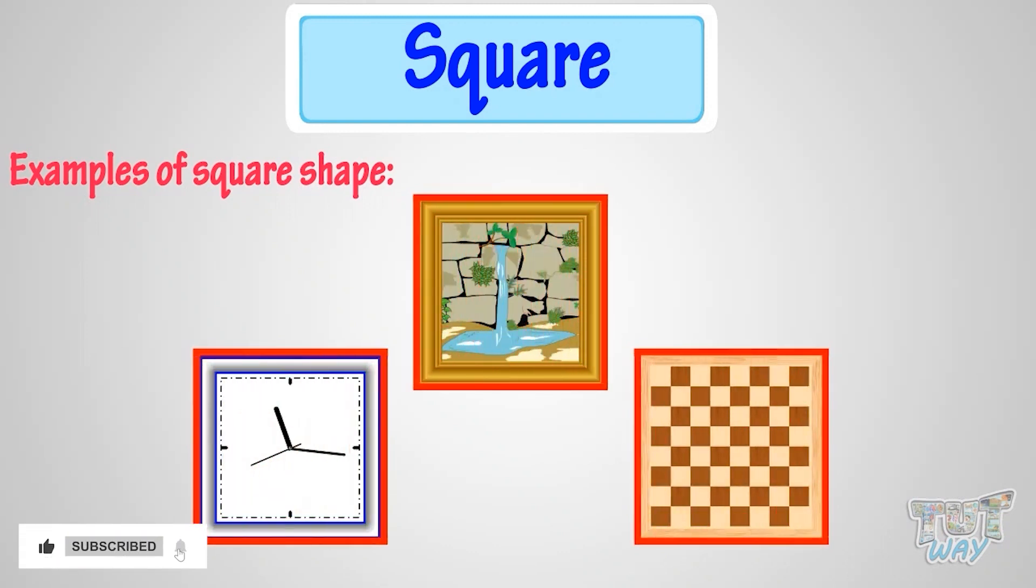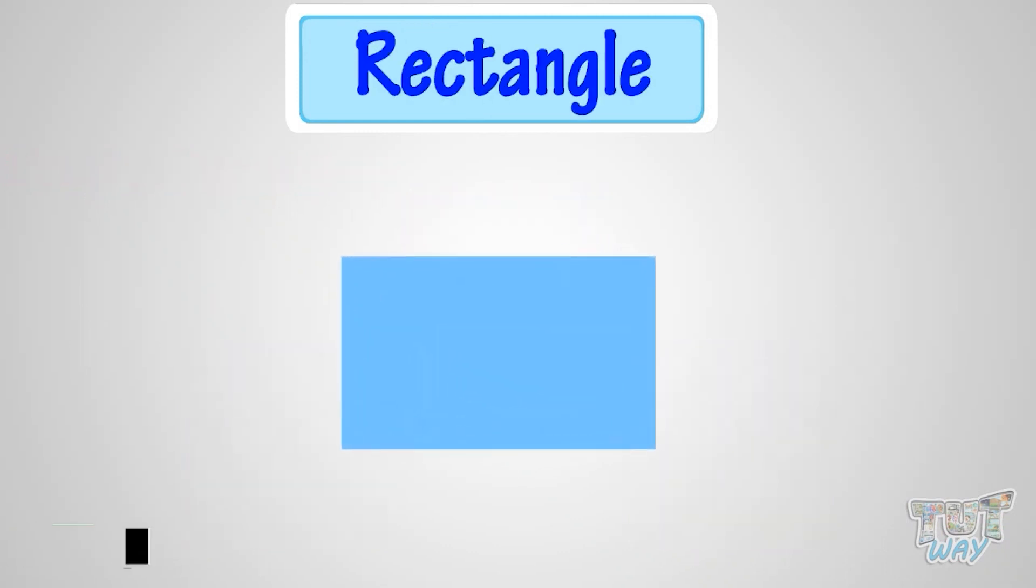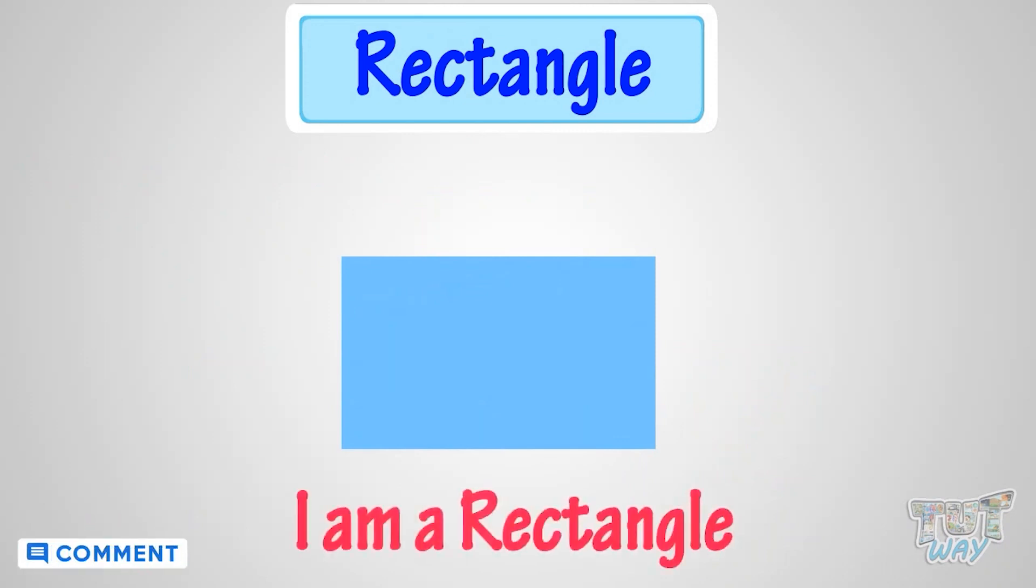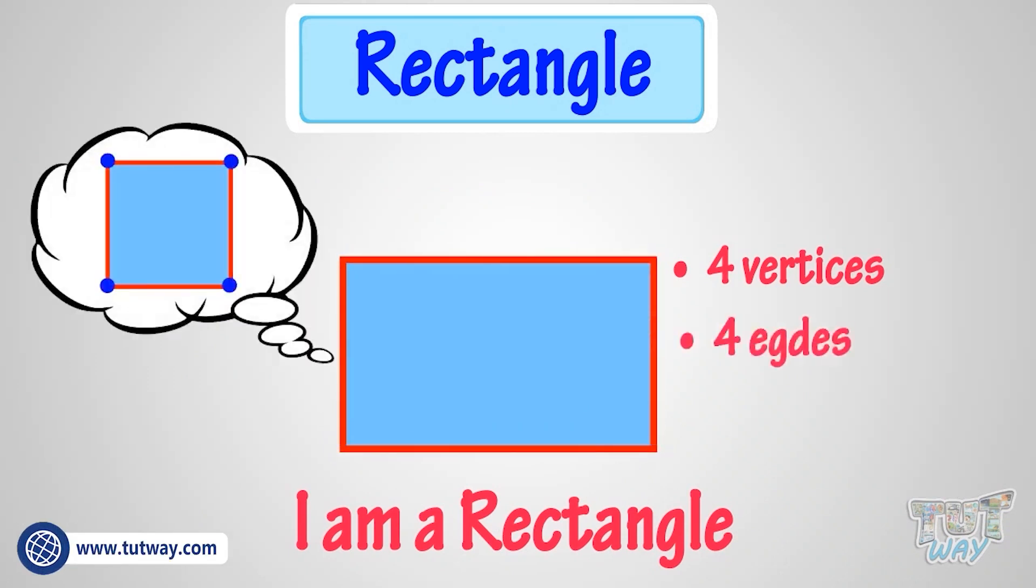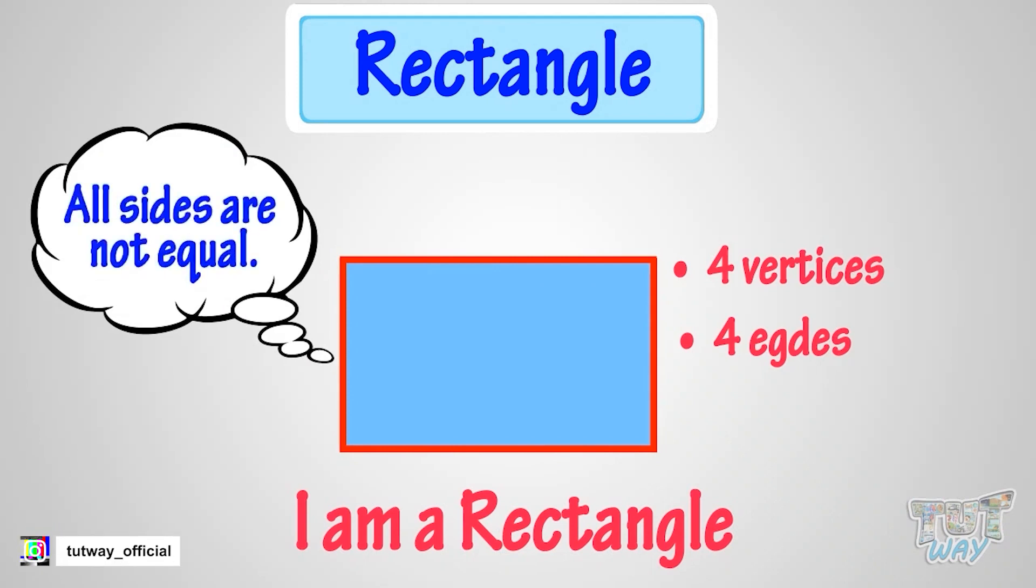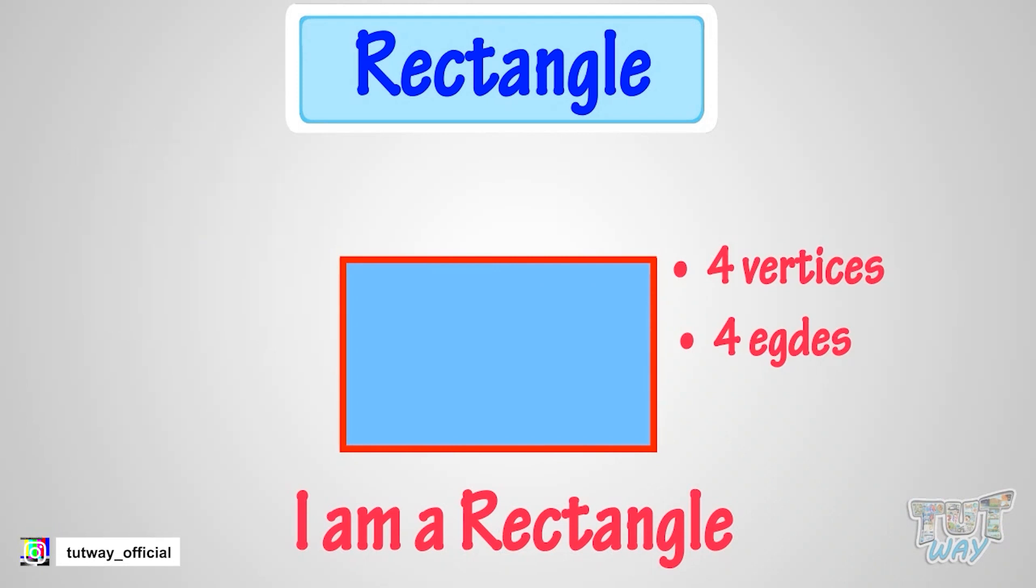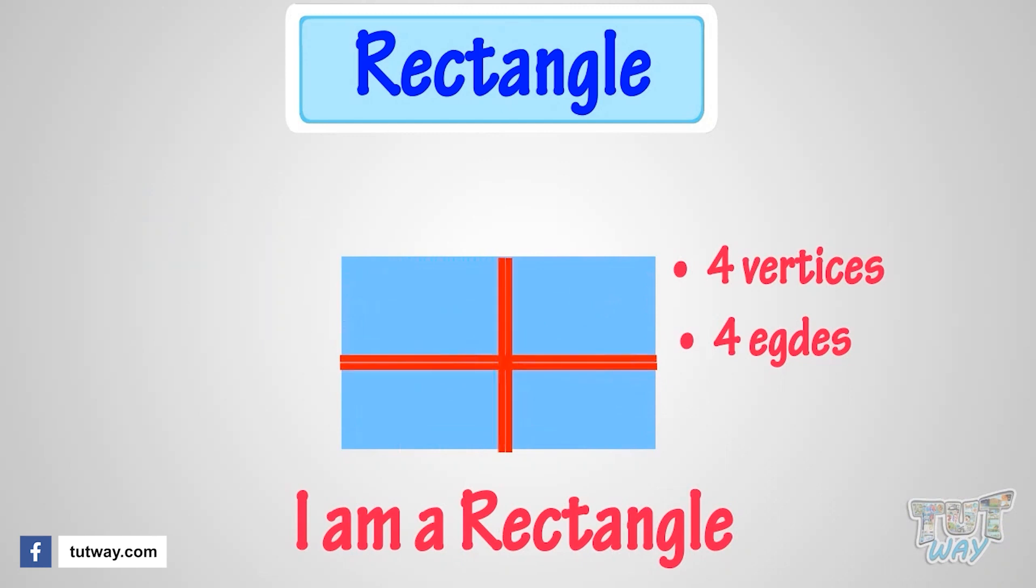Now let's learn another figure, that is rectangle. I am a rectangle. I also have four vertices and four sides like a square, but all my sides are not equal. However, my opposite sides are equal.